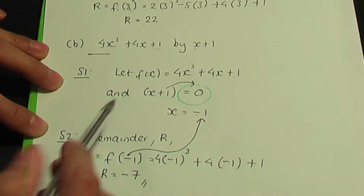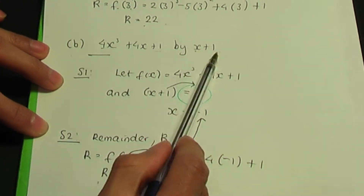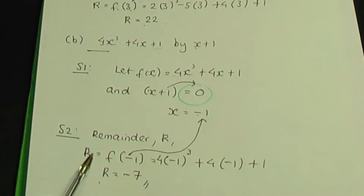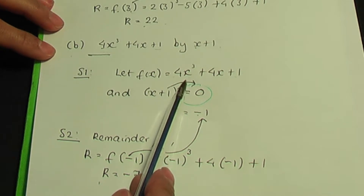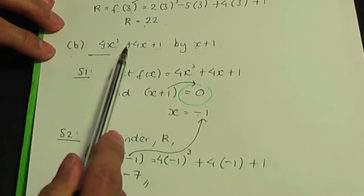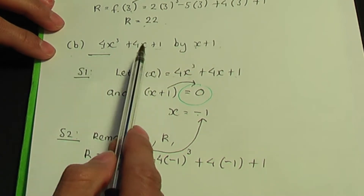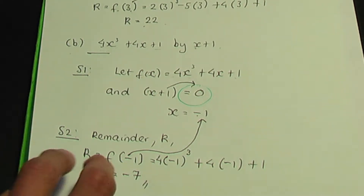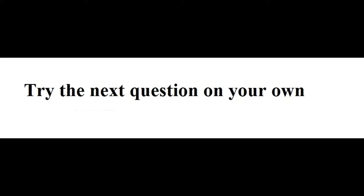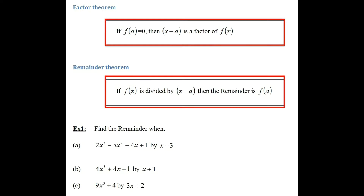So minus 7 is the remainder when the polynomial in part B is divided by the linear. One thing to note: the remainder theorem is only used when a polynomial is divided by a linear. So if you have a question to work out the remainder, you can only use the remainder theorem if the polynomial is divided by a linear term. Now, back to the screenshots. So part C.